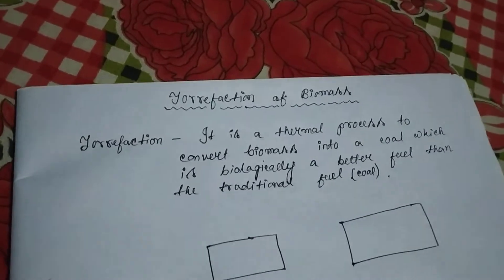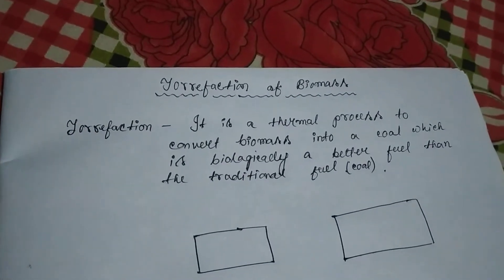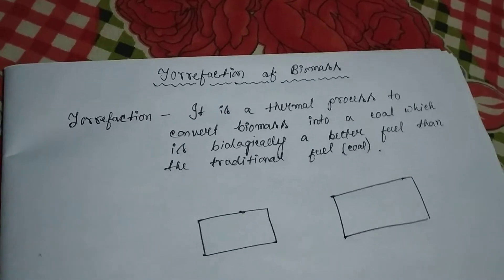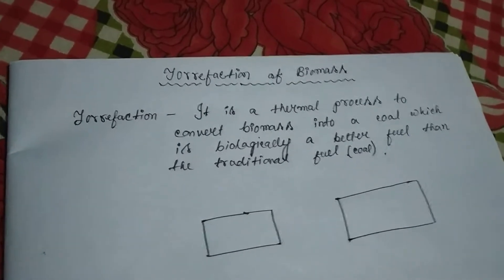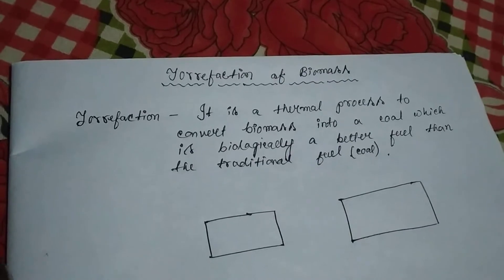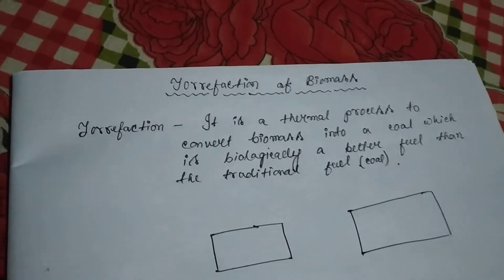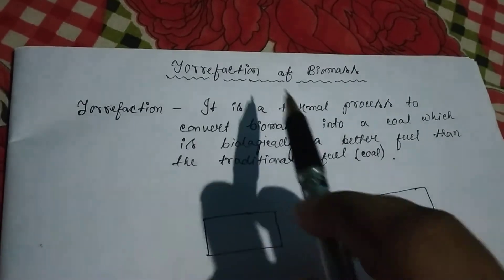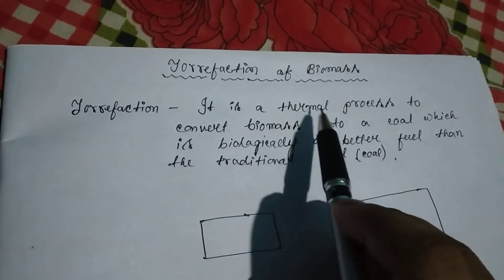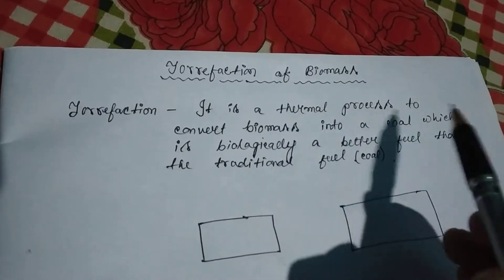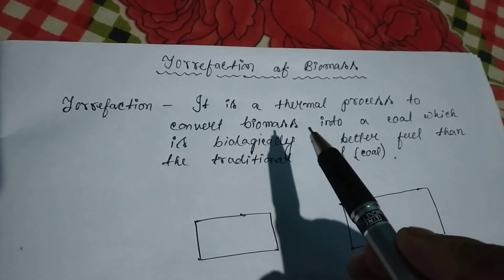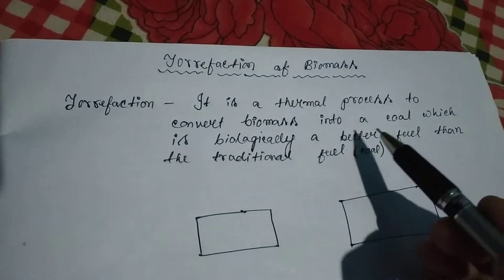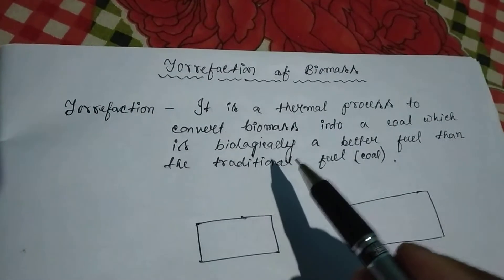Hello everyone, this is our topic of torrefaction of biomass. So basically, at first, what is torrefaction? Torrefaction in scientific terms is a thermal process to convert biomass like straws and sugarcane remains into a coal which is biologically a better fuel than the traditional fuel.